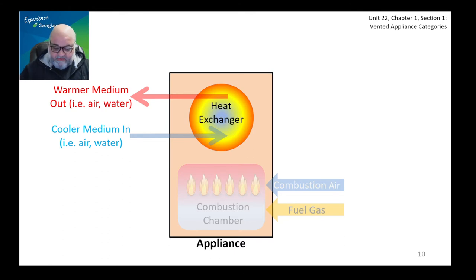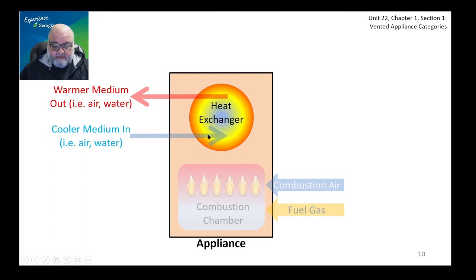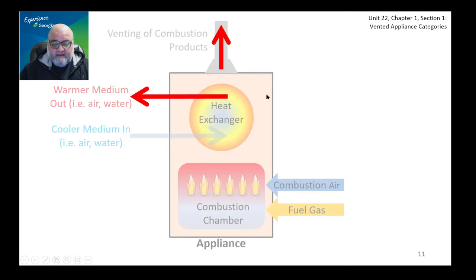We have generated heat, and we've allowed the heat to be picked up by whatever medium we're using — air or water — that comes in and takes the heat away. However, there is no perfect heat exchange. Some of the heat will stay behind, and the appliance itself will have two main ways to dissipate heat: one is through the heat exchanger, and the other, unfortunately, is through what we call the venting system, also called the flue.